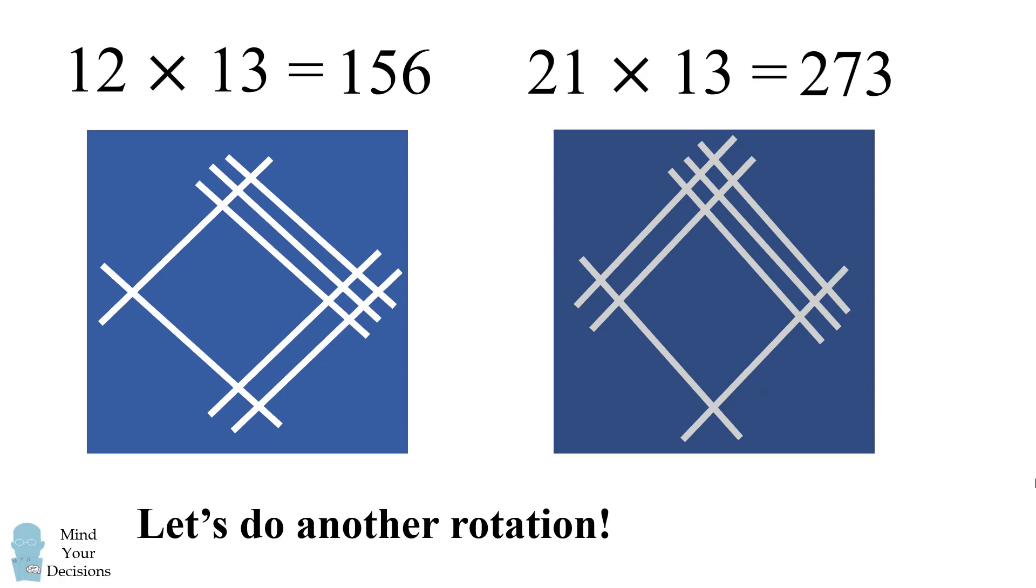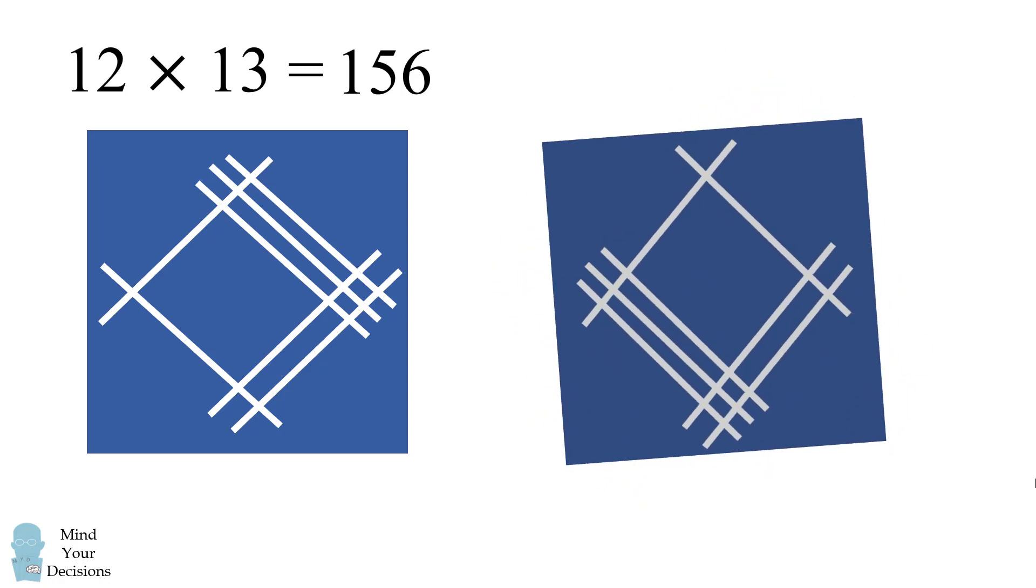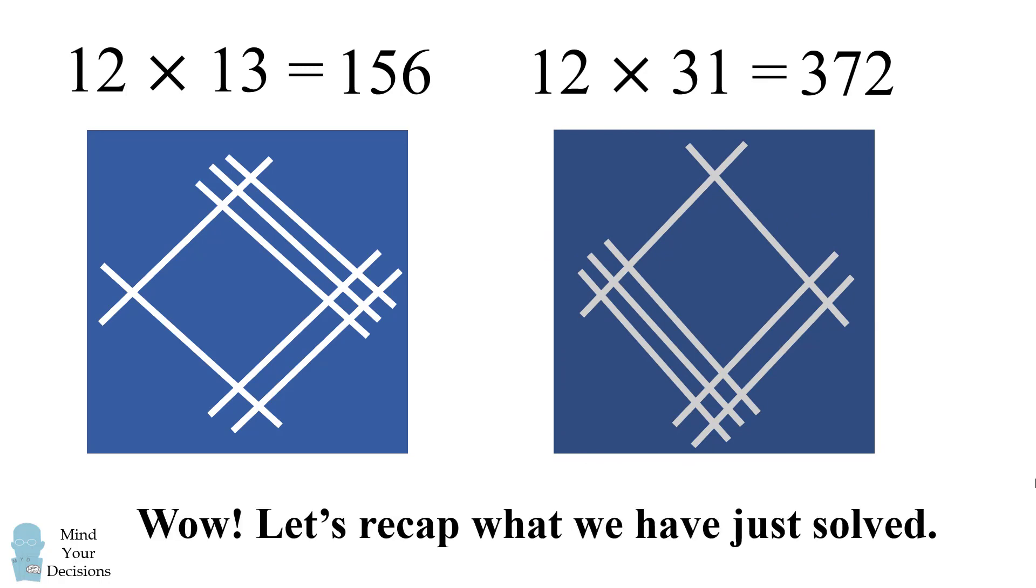We can do another rotation and we'll get another problem which is 13 times 12 which is 156. We can do a final rotation. This will be 12 times 31 which equals 372. One more rotation will bring us back to where we started.